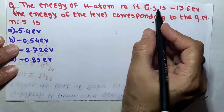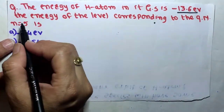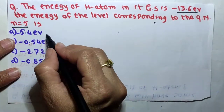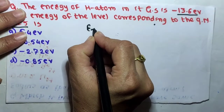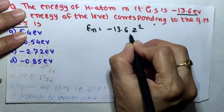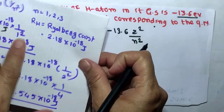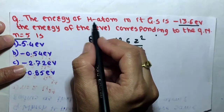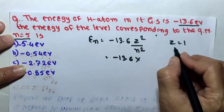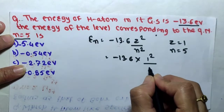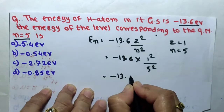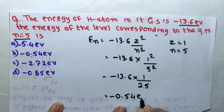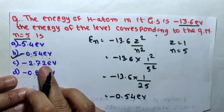MCQ 7: The energy of hydrogen atom in ground state is −13.6 eV. The energy of the level corresponding to n = 5 is? Using E = −13.6 × Z²/n² = −13.6 × 1/25 = −0.54 eV. Therefore option B is the correct answer.